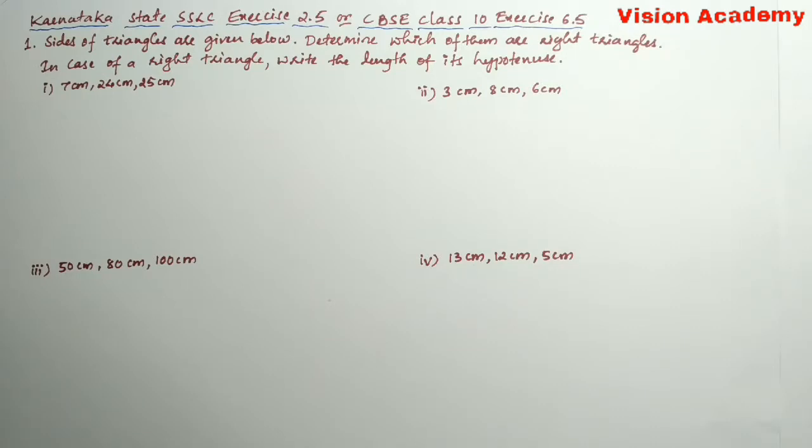Question number 1: Sides of triangles are given below. Determine which of them are right triangles. In case of a right triangle, write the length of its hypotenuse.